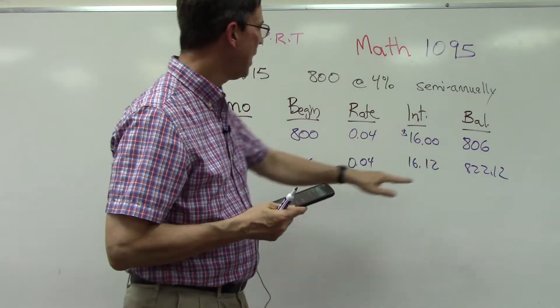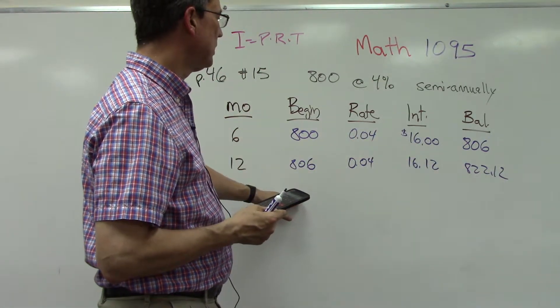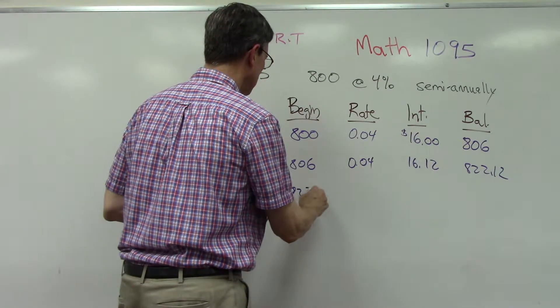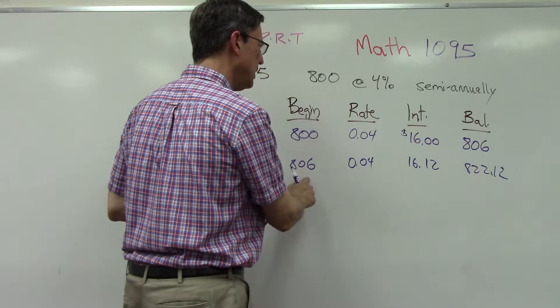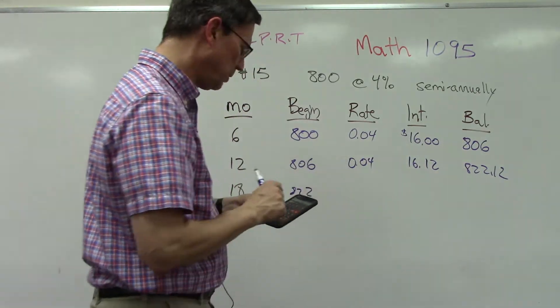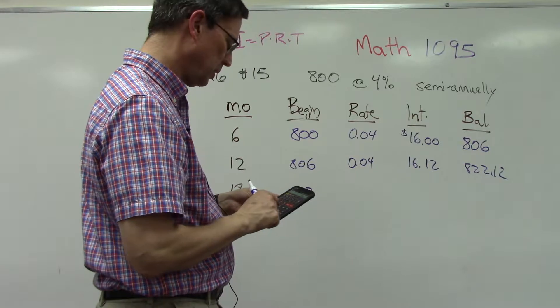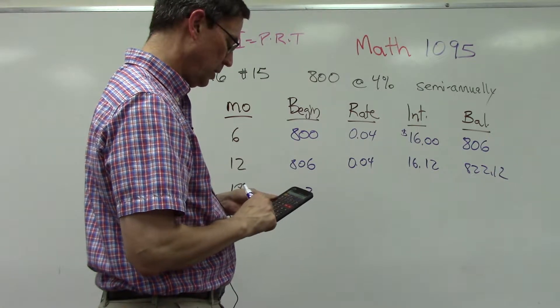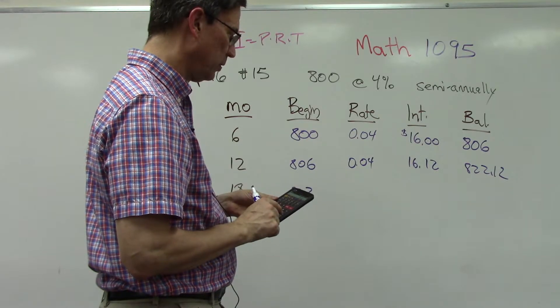Now we can take that as our starting point here. Let me just make sure - 806 times 0.04 times 0.5, I'm right okay. Plus the 806, so $822.12.